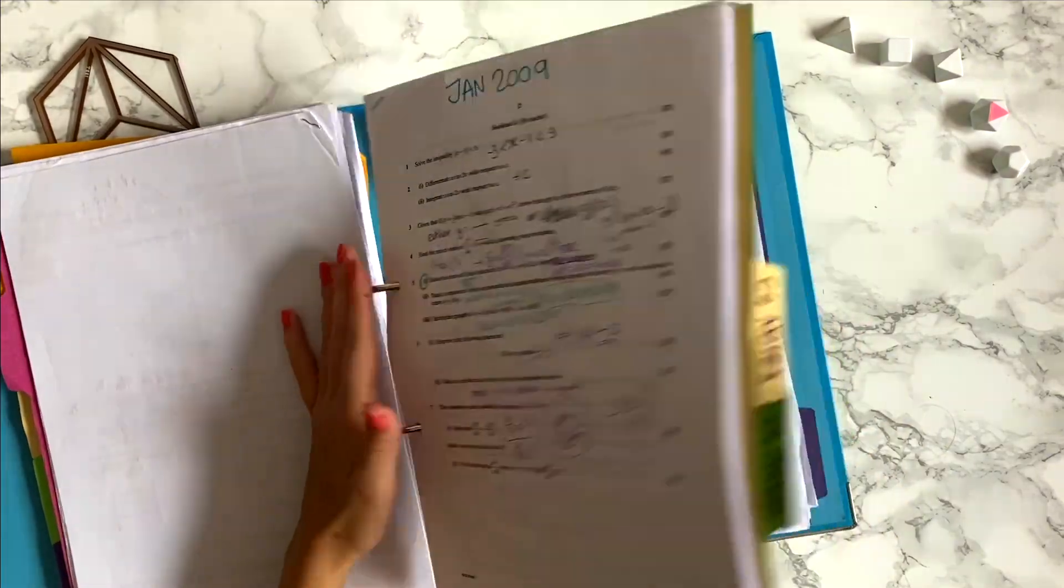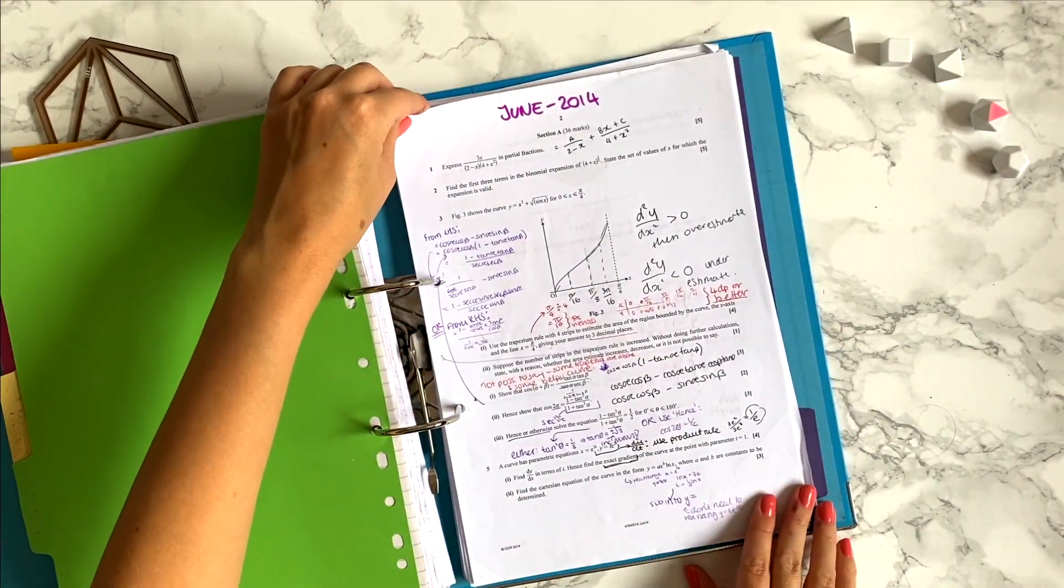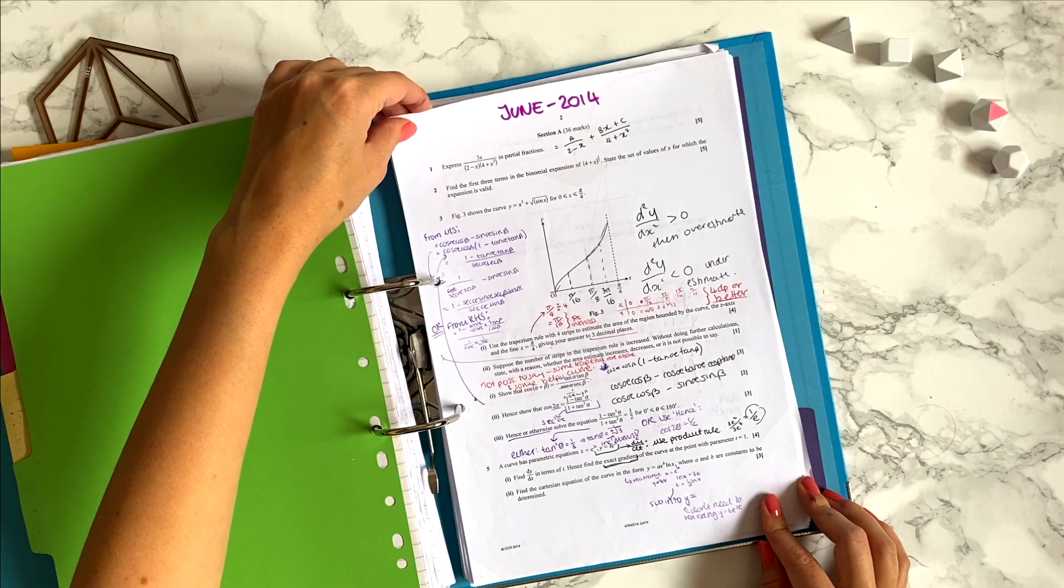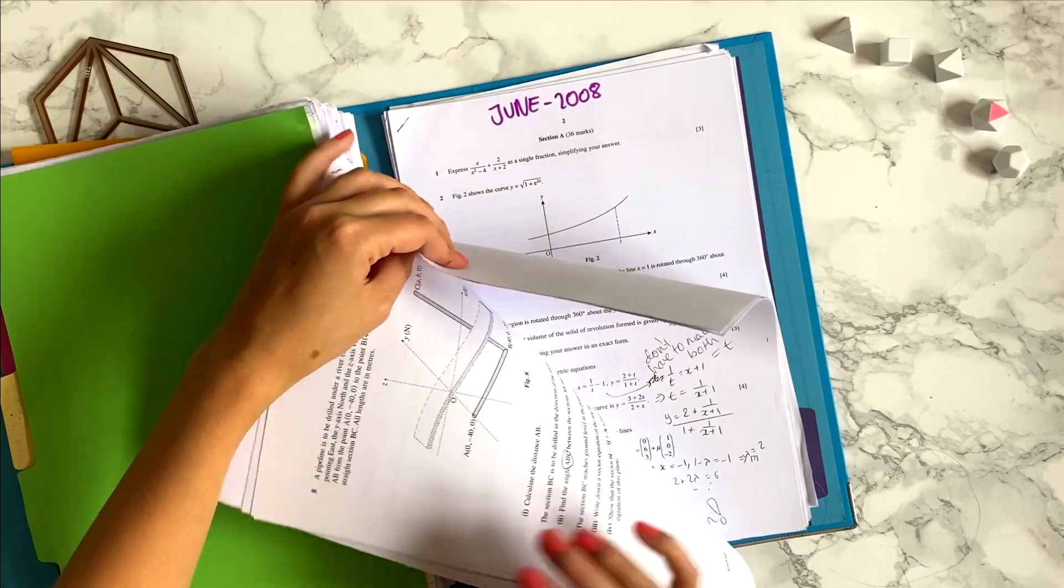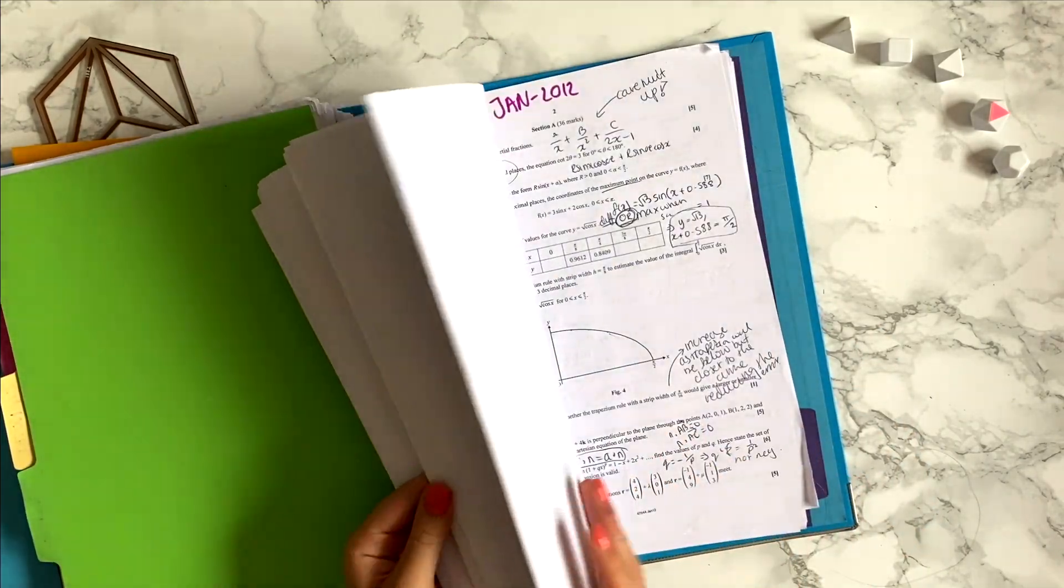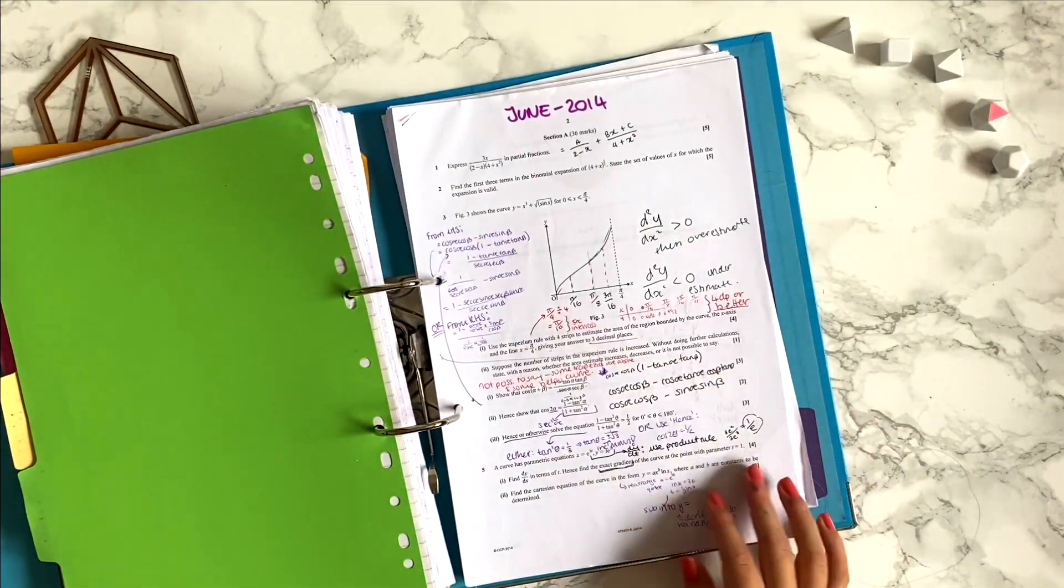This is my C3 and C4 past paper file. I did all the past papers for my exam board, wrote the year clearly on the top and kept it in a file. That way a few days before the exam I could easily flick through it and remind myself of what to watch out for in the exam.